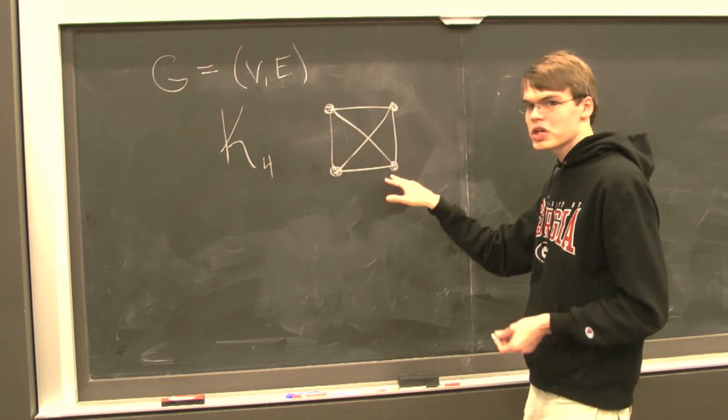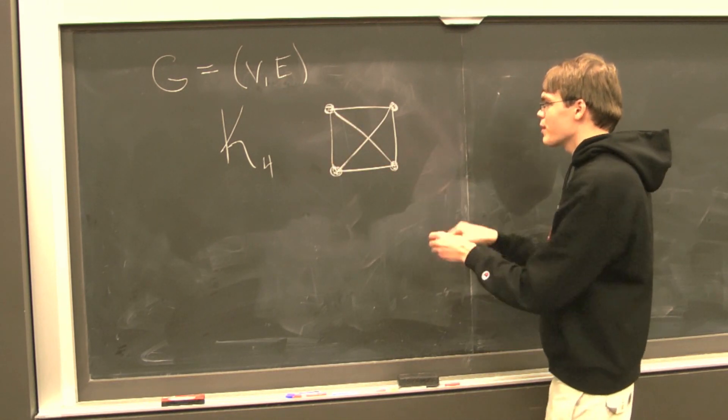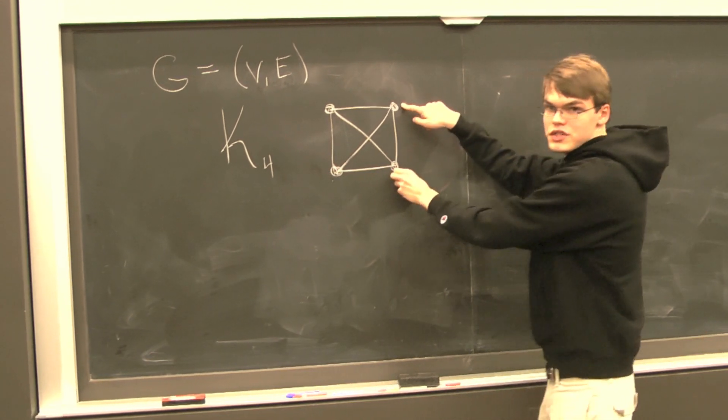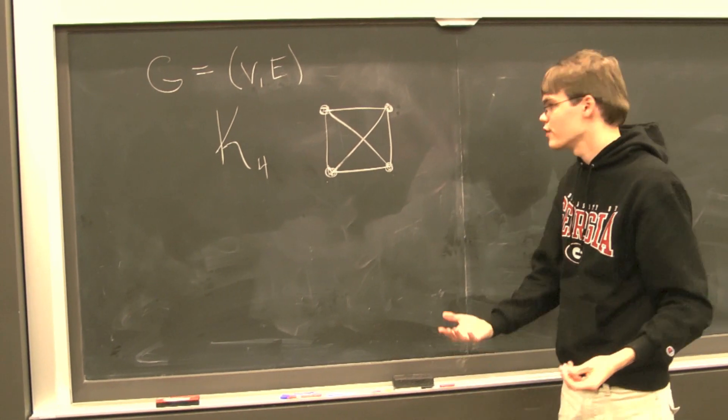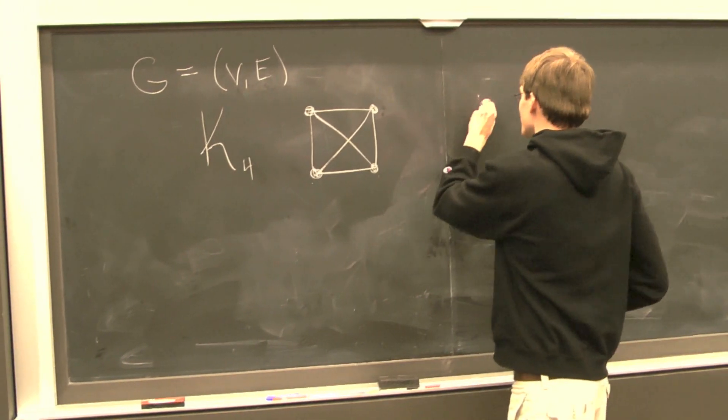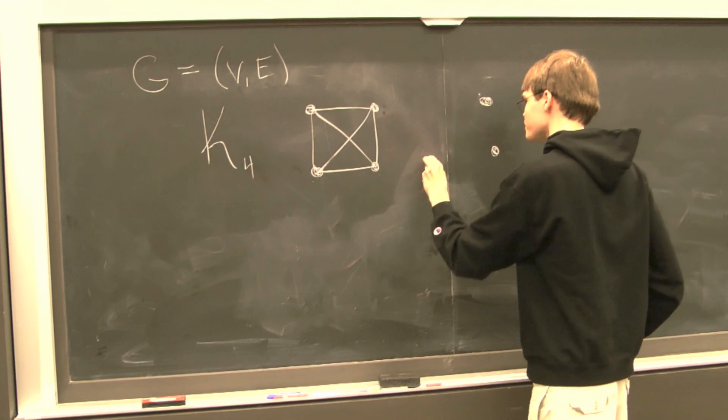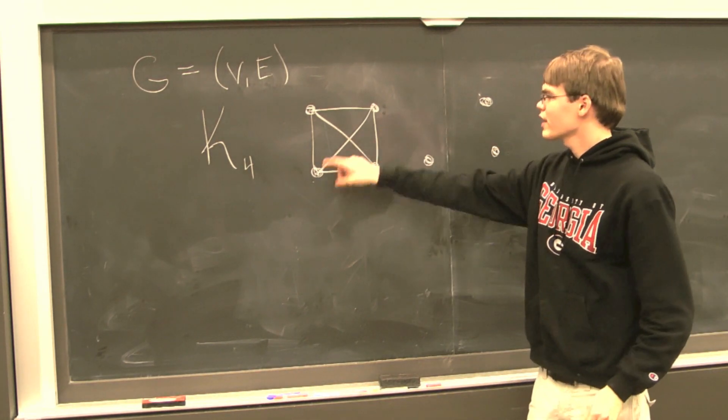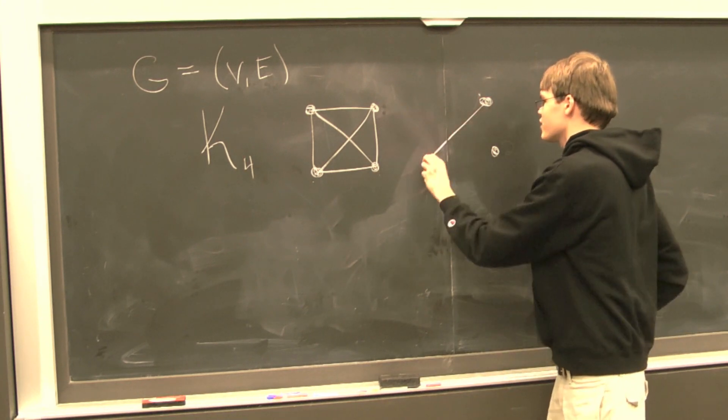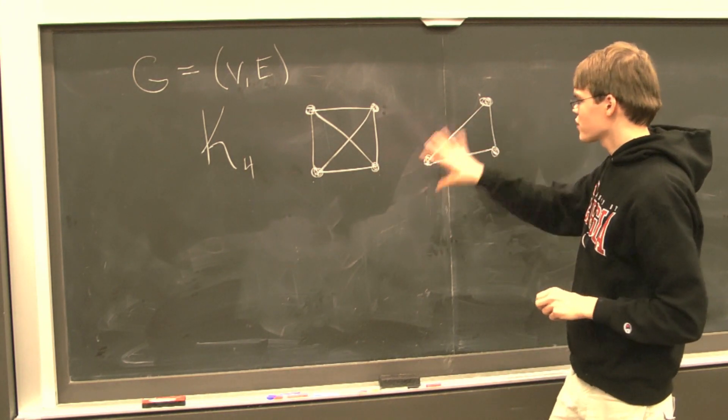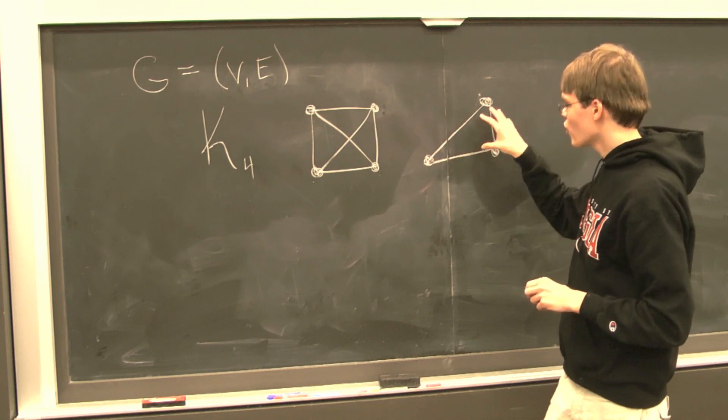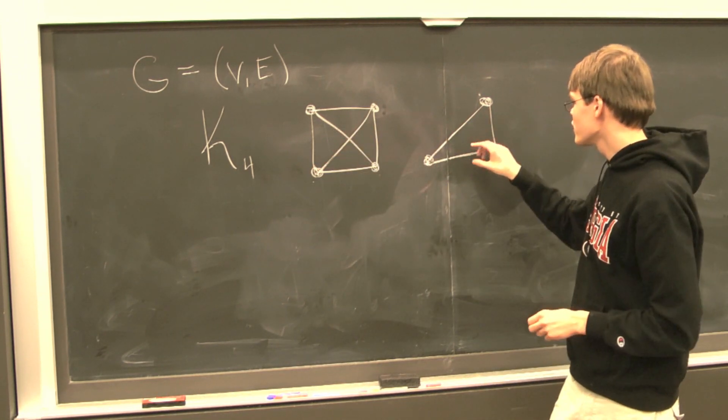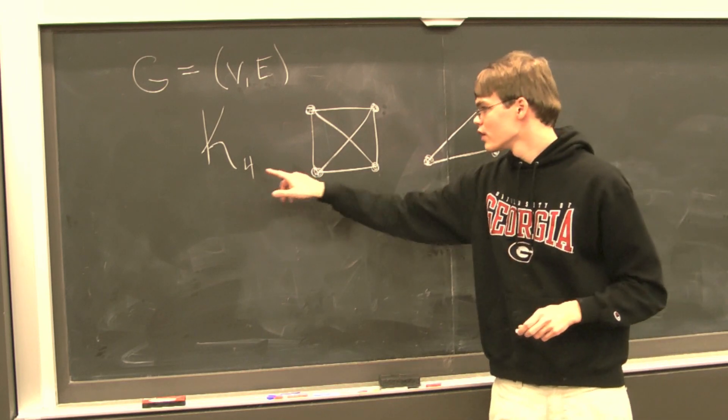For example, a subgraph of K4: we might select these three vertices here, here, and here as our subset of vertices. So now we have something like this. And then let's just take the same edges. Certainly it's a subset of vertices, and all the edges are edges in our original graph. And so here we have a subgraph of K4.